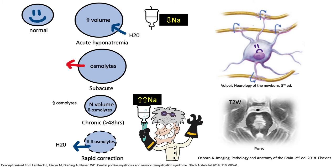So what happens is, in the pons, where there are abundant white matter tracts, there is loss of the myelin, but the bare neurons are preserved. This is the reason for the striated appearance of the transverse pontine tracts.